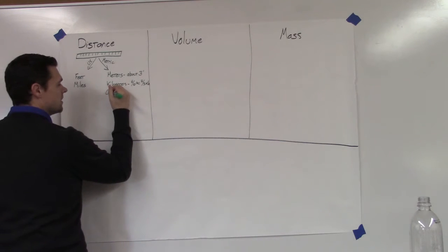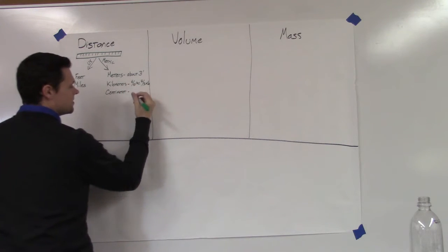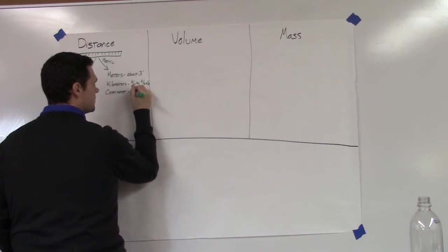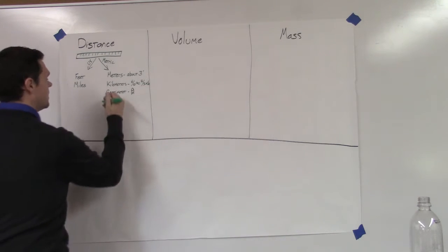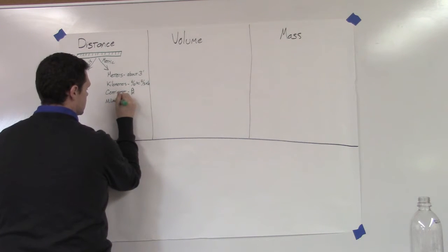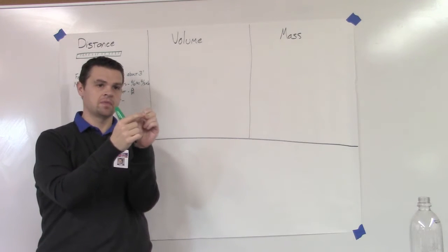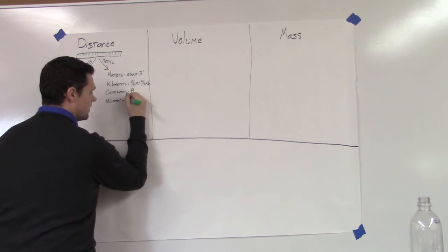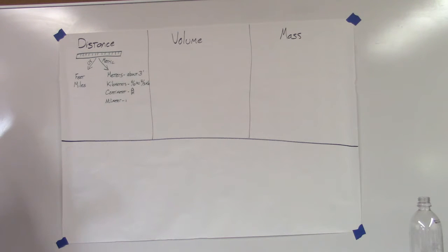There's also a centimeter, which is about how wide your finger is — from your fingernail to your knuckles. And then there's a millimeter, which is about the width of a dime — very, very thin, maybe not even as wide as a line drawn on paper. So that's distance in the metric system.